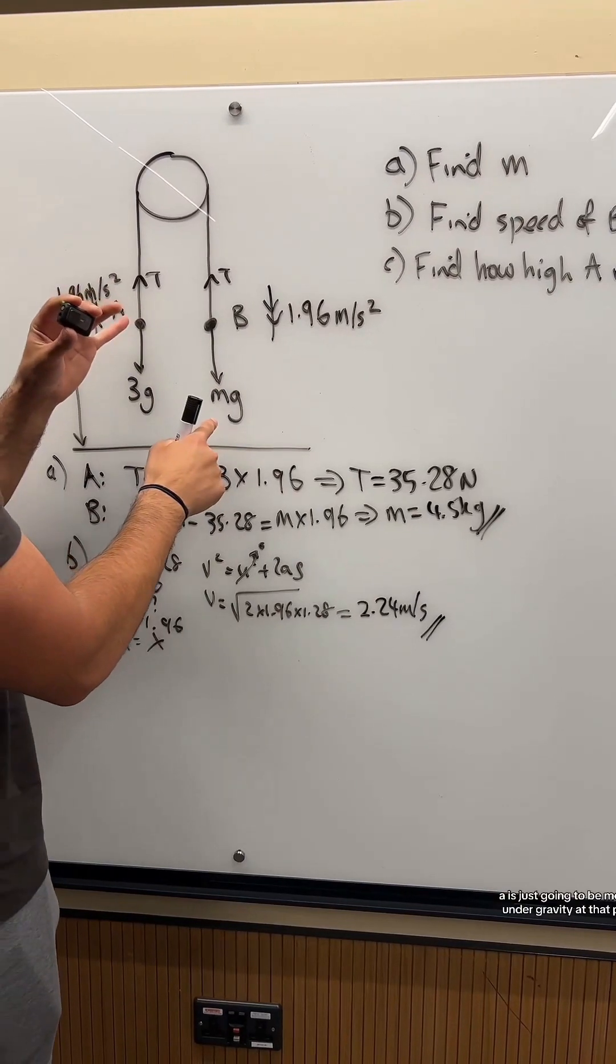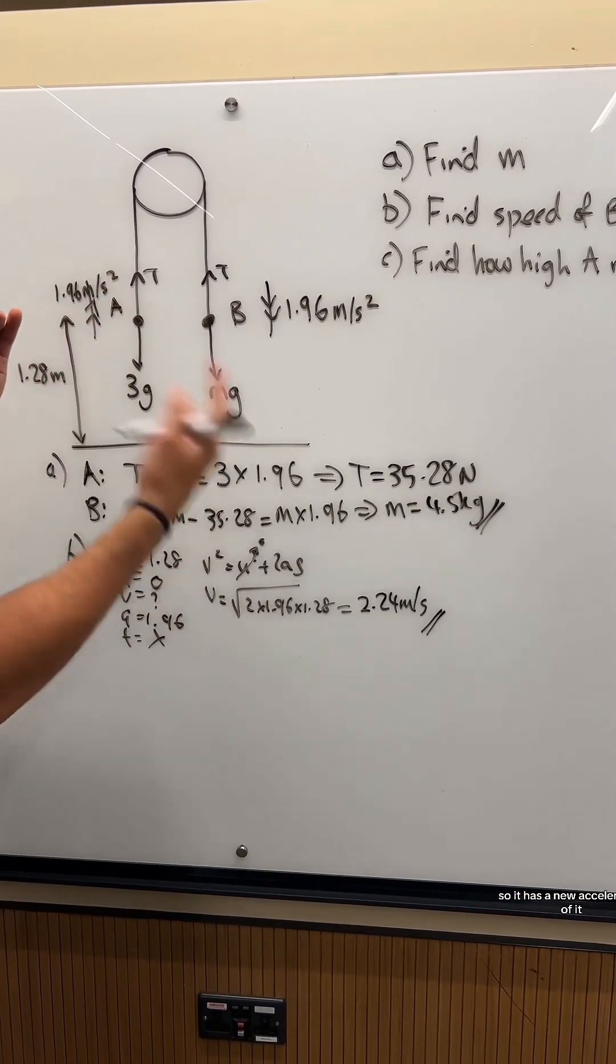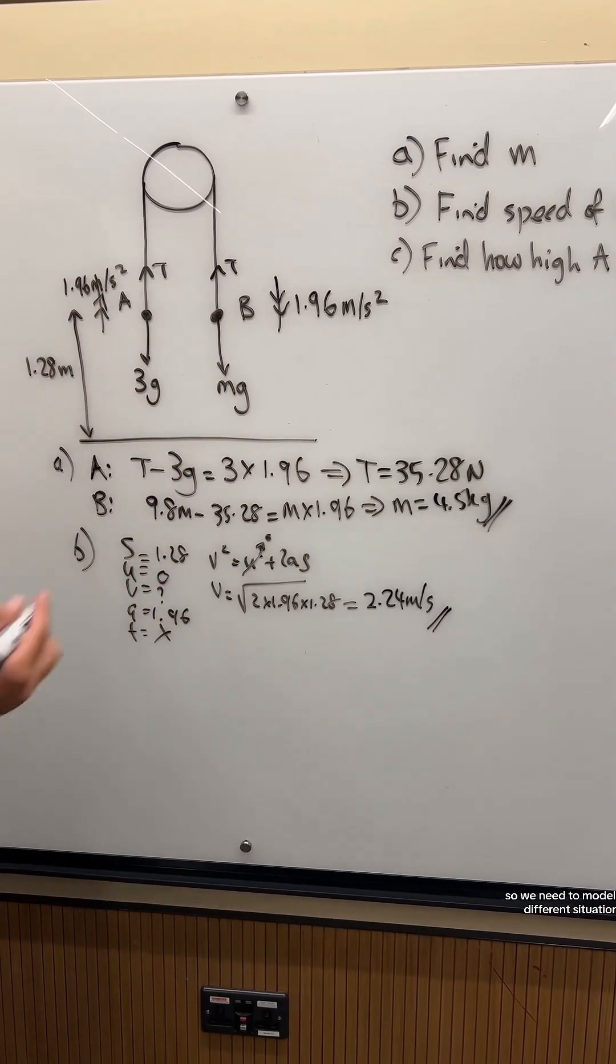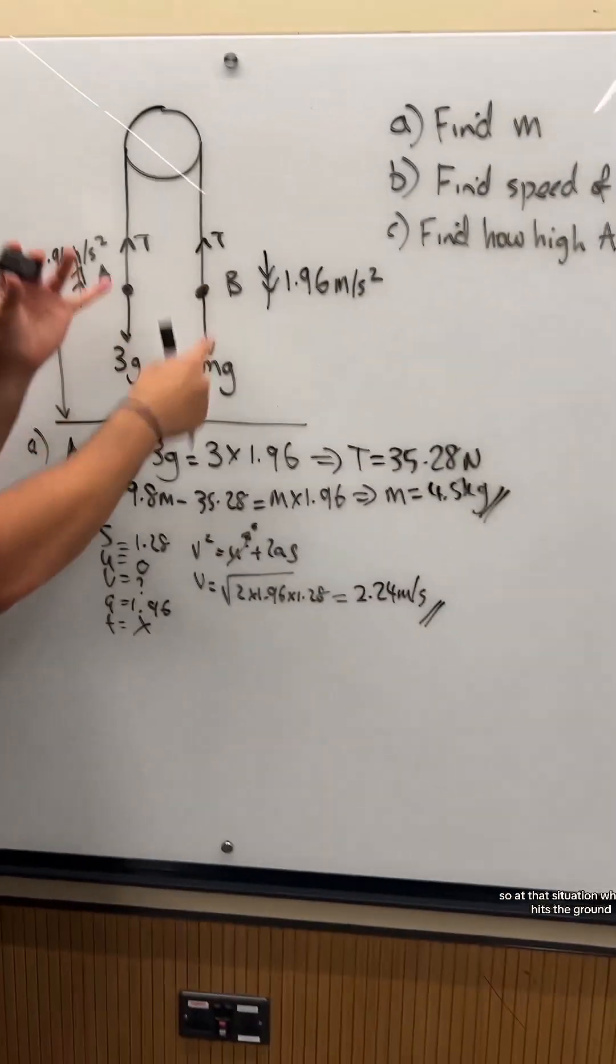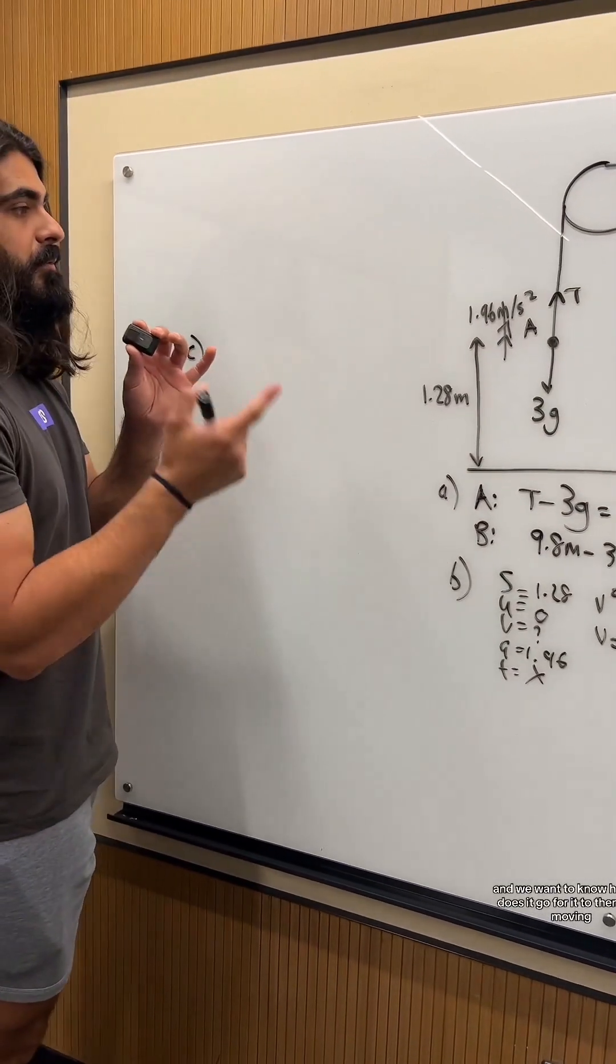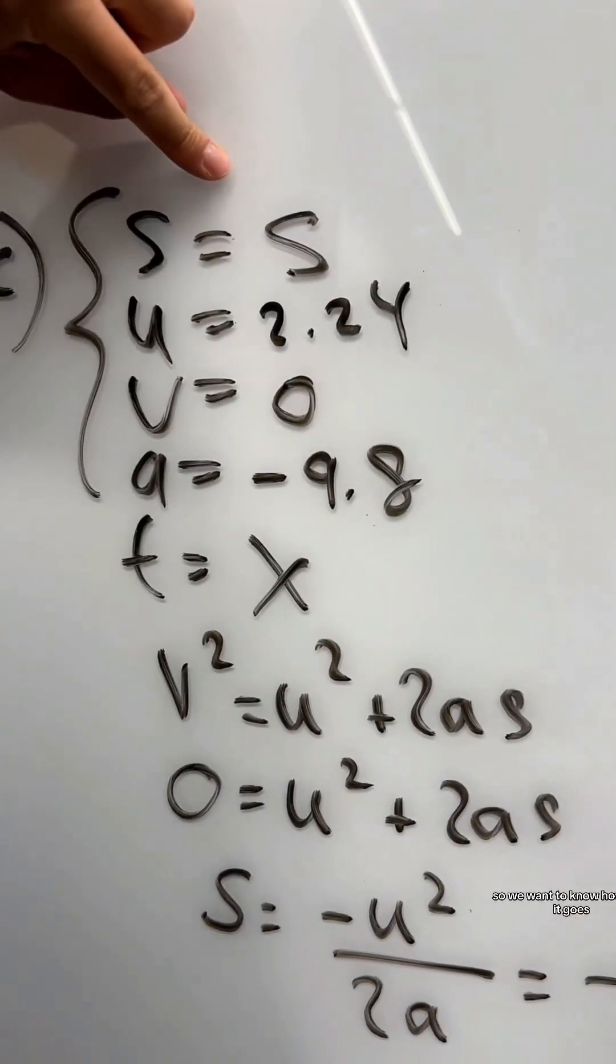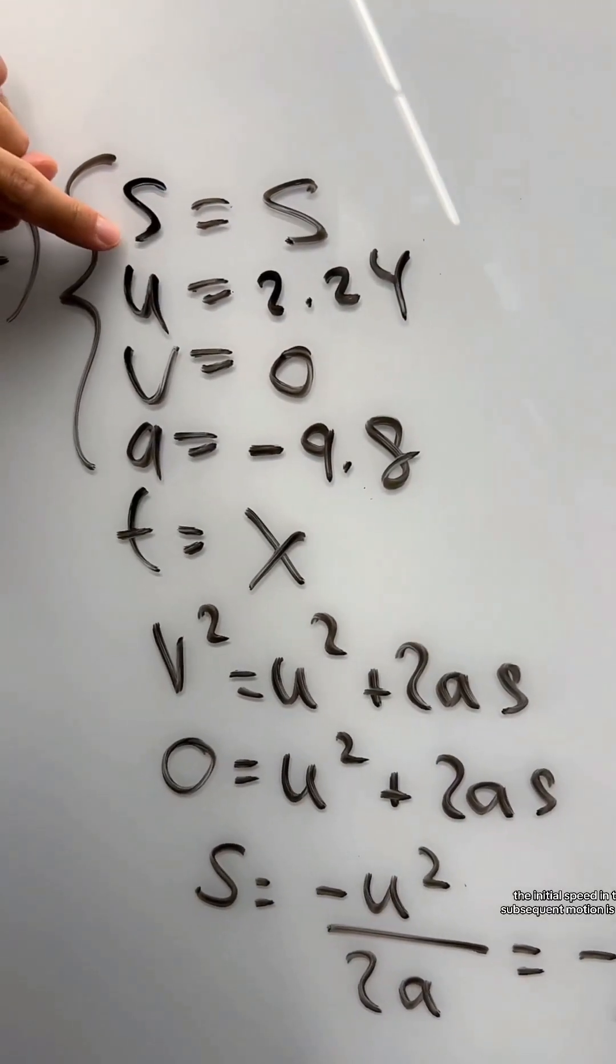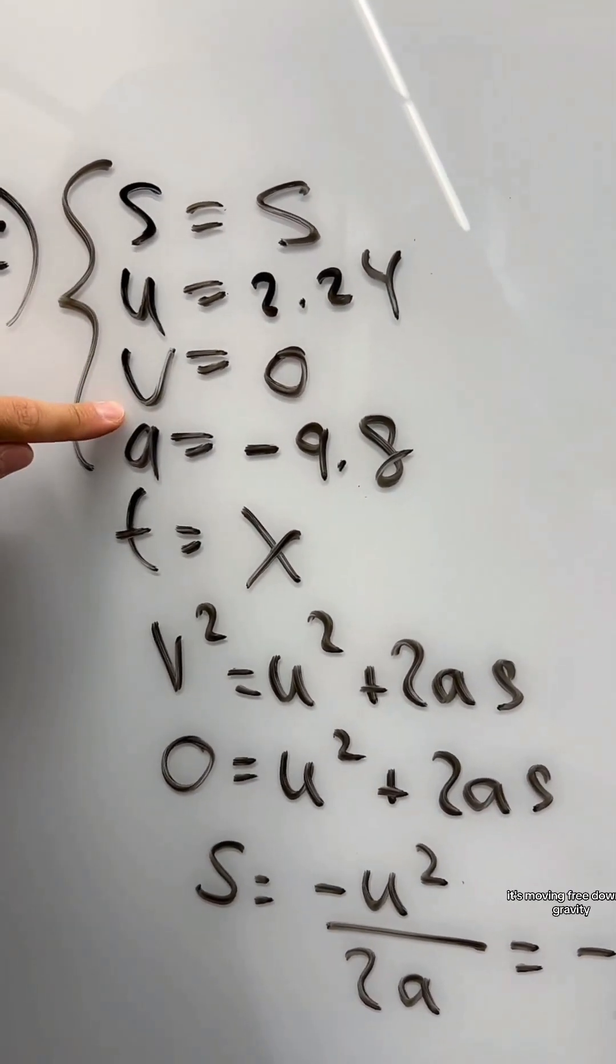Now when that happens, A is just going to be moving under gravity at that point. It has a new acceleration, just moving freely under gravity. So we need to model this different situation. At the situation where B hits the ground, A is going to be moving at this speed, and we want to know how far it goes before it stops moving. The initial speed in the subsequent motion is 2.24. We want to know when it stops, meaning the highest point.